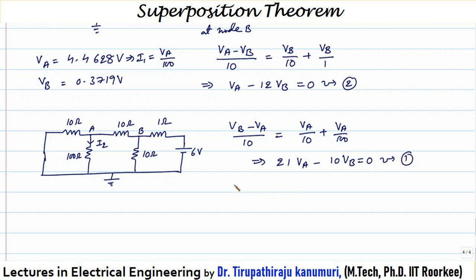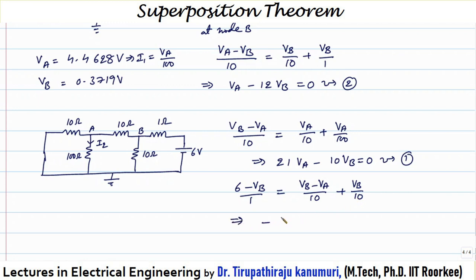Applying KCL at node B: the current entering is (6 minus VB) divided by 1, and the leaving currents are (VB minus VA) divided by 10 plus VB divided by 10. Simplifying this gives: minus VA plus 12·VB equals 60. This is my second equation.